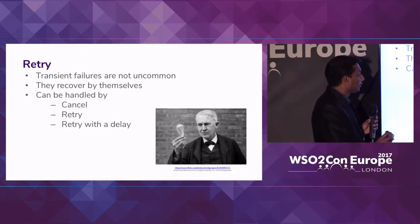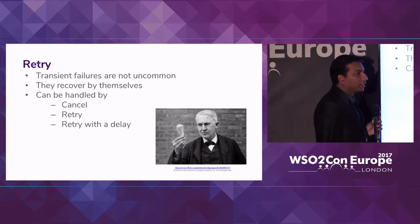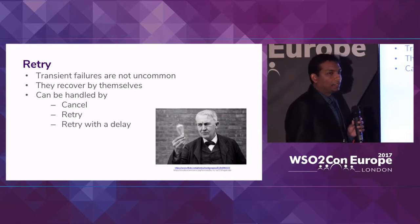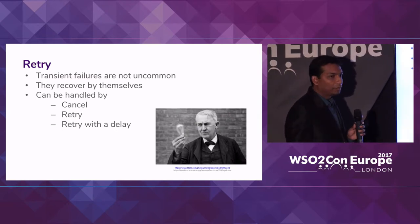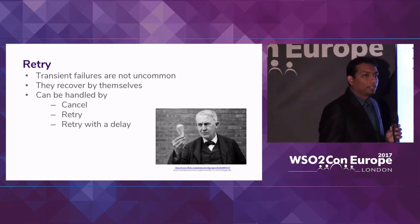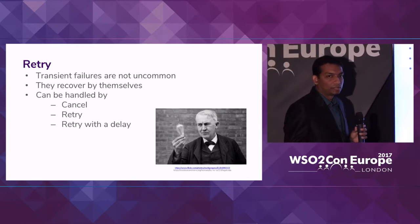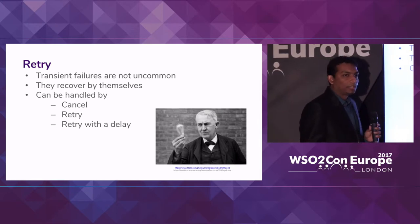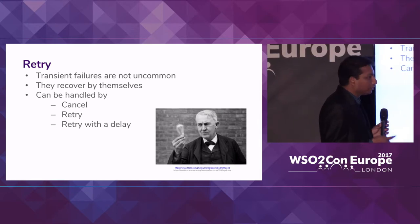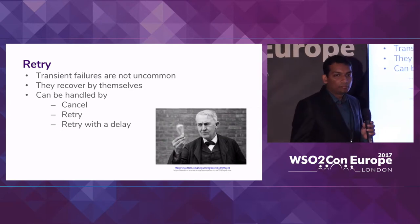The next pattern is retry. I'm pretty sure everyone can identify this picture — this is Thomas Alva Edison who invented the light bulb. While trying to implement it, he failed several thousands of attempts, but he never gave up. He tried thousands of attempts and finally invented the light bulb.